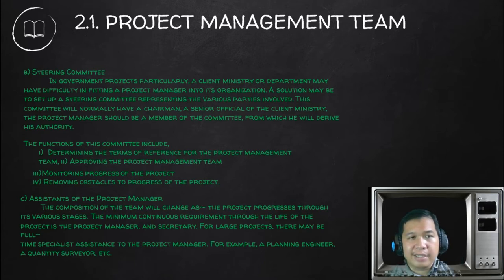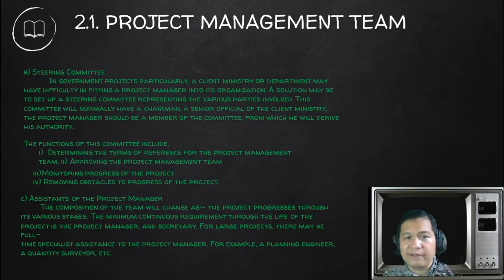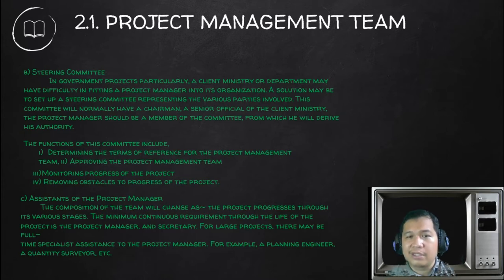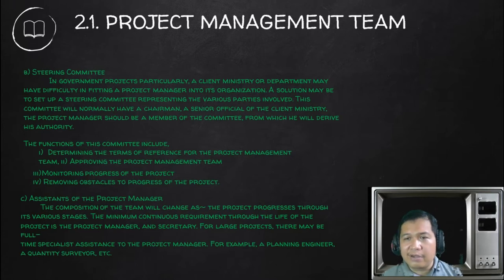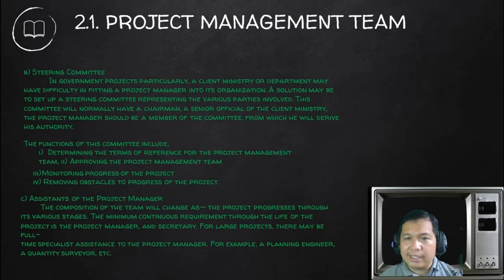Regarding assistance to the project manager: as the project progresses through its various stages, the minimum continuous requirement through the life of the project is the project manager and a secretary. For large projects, there may be full-time specialists assisting the project manager — for example, a planning engineer or a quantity surveyor. The quantity surveyor's function is to estimate the quantities for the project. The planning engineer makes sure that the project is well scheduled and all activities are laid out.